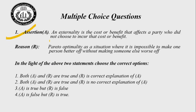Question number 1. Assertion A: An externality is a cost or benefit that affects a party who did not choose to incur that cost or benefit. Reason R: Pareto optimality is a situation where it is impossible to make one person better off without making someone else worse off. Both statements are correct, but R is not the correct explanation of A — there is no logical relationship between the two statements. The right answer is choice number 2.